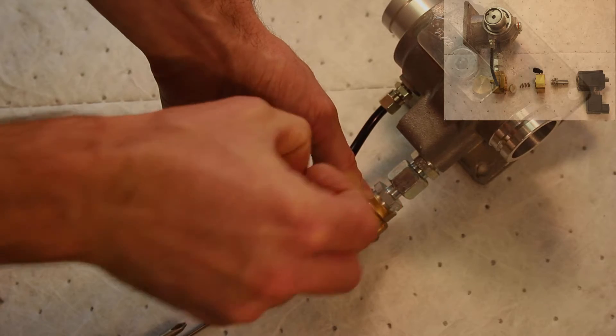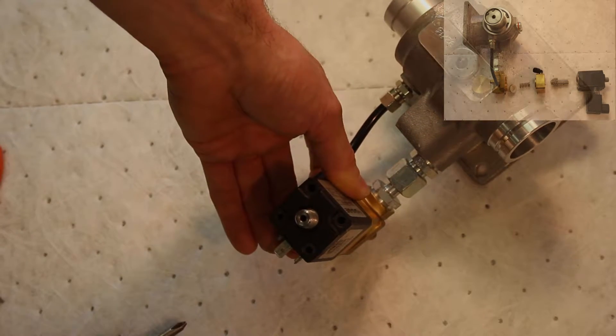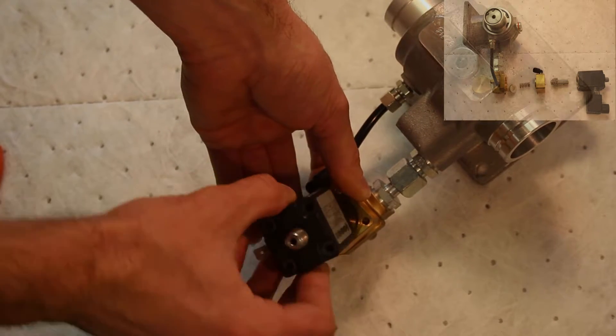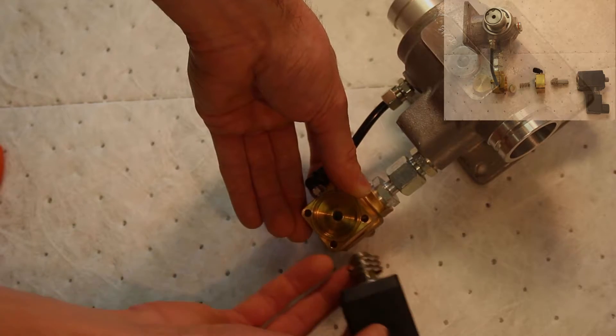The solenoid valve can now be removed from the compressor. Be careful as you lift the valve. The solenoid anchor is loose inside and may slide free of the valve body.